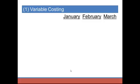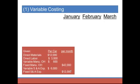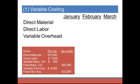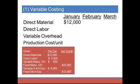Under variable costing, I have a column for each month — January, February, and March — and we're going to find the production cost per unit. We need to recall what costs are assigned to inventory under this method. From our notes: direct material, direct labor, and variable overhead are the variable manufacturing costs assigned to inventory. Note that variable selling and administrative expense of $6,000 is not assigned to inventory — it's a period cost. Direct material is $12,000 per car in each of the three months.